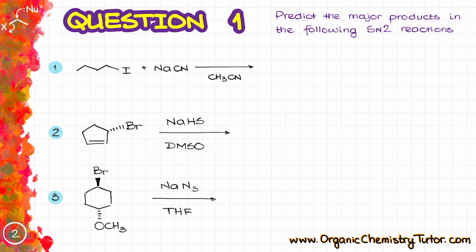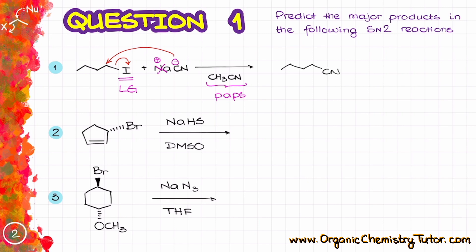In the first reaction, I have iodine as my leaving group and cyanide, CN⁻, as my nucleophile. Sodium is merely a spectator ion, so I'm going to cross it out. The CH₃CN, that is acetonitrile, which is my polar aprotic solvent. The cyanide is going to perform a nucleophilic attack on the carbon bearing the leaving group, displacing the iodine, giving me a final product where I have cyanide instead of iodine. Notice that the carbon with the leaving group does not have any meaningful stereochemistry, so there is nothing to indicate in terms of stereochemical inversion.